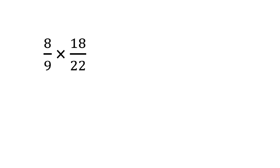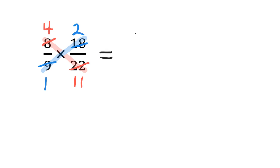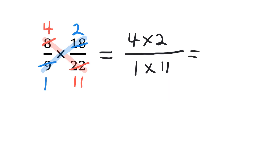So we're going to start by reducing between the 8 and the 22. The greatest common factor between 8 and 22 is 2. 8 divided by 2 is 4, and 22 divided by 2 is 11. And then we go to the 9 and the 18, and we're going to reduce across this way. The greatest common factor between 9 and 18 is 9. 9 divided by 9 is 1, and 18 divided by 9 is 2. Now we're going to rewrite it: 4 times 2 is the new numerator, and 1 times 11 is the new denominator. 4 times 2 is 8, and 1 times 11 is 11.